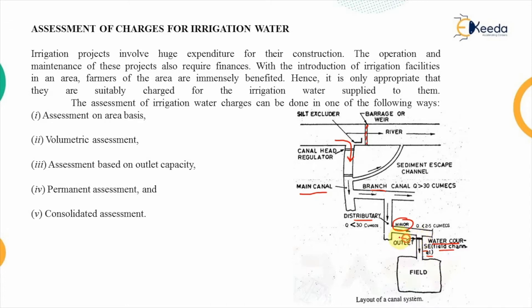This water course has one point known as the outlet. The construction of all of these facilities is the responsibility of the government — specifically the state government — to construct and ensure the supply of water to the farmers. To construct and maintain these facilities up to the outlet point, the government will spend certain money. This entire water supply is insured through canals or reservoirs at the expense of the government.